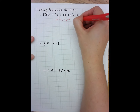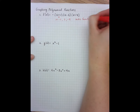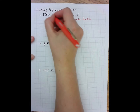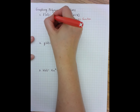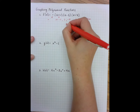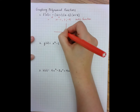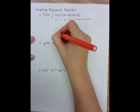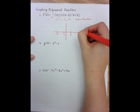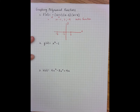I can also see that it is a cubic function because x times x times x is x cubed, and I can also see that the leading coefficient is negative.